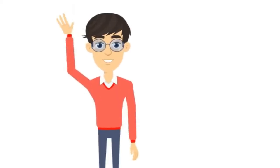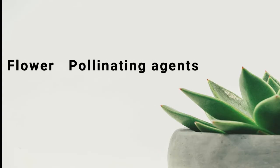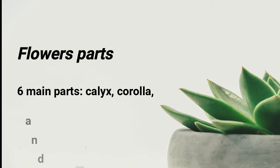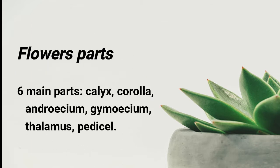Hello everybody. Today's class is mainly on pollinating agents in a flower. So a brief recap: a flower has six parts — calyx, corolla, androecium, gynoecium, thalamus, and perianth.